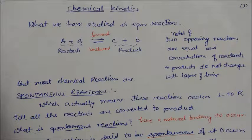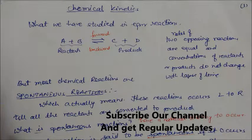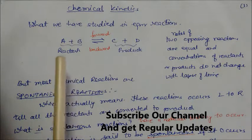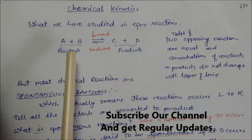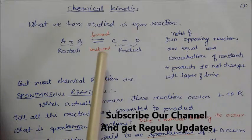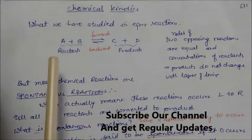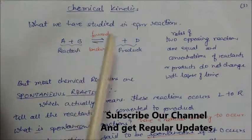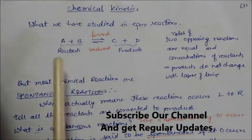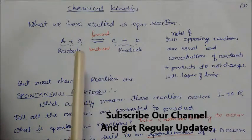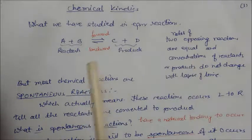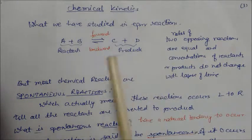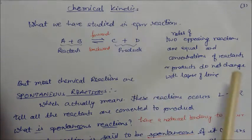Welcome to this new session on chemical kinetics. In previous chapters, we studied chemical equilibrium, where reactants A and B form products C and D, and C and D also start forming A and B. The forward reaction and backward reaction occur in two directions. When both steps are going forward and backward, this is called chemical equilibrium. The rates of these two opposing reactions are equal and concentration of reactants or products do not change with time.